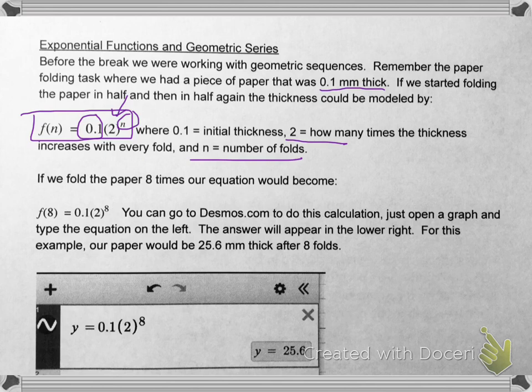Okay, so if we wanted to figure out how thick the paper would be after 8 folds, this is what our expression would become. We'd have our 0.1 millimeters, we'd have our common ratio which is 2, and we'd have that raised to the 8th power for the 8 folds.